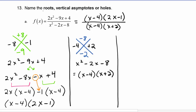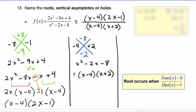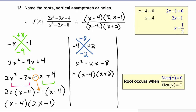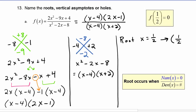Looking for roots in f of x: roots occur when the numerator equals zero but the denominator does not. The numerator is zero at x equals four and x equals one half. However, the denominator also equals zero at x equals four, so x equals four is not a root. The only root is at x equals one half, giving the point (one half, zero).